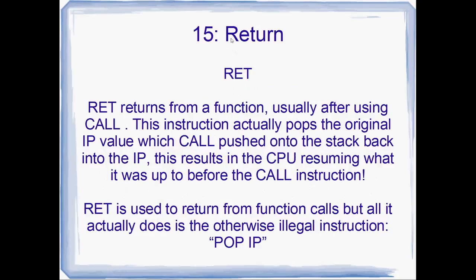So once you've called a sub-function, at some point you're probably going to want to return. RET, short for return, returns from a function, usually after a CALL instruction. What this instruction does is pop the original value of the IP back into the IP. If you remember that CALL pushes the IP and then jumps to some other part in the code, RET pops from the stack back into the IP so that the CPU continues executing from where it was before the CALL instruction. RET is used to return from a function call, but all it actually does is the otherwise illegal POP IP.